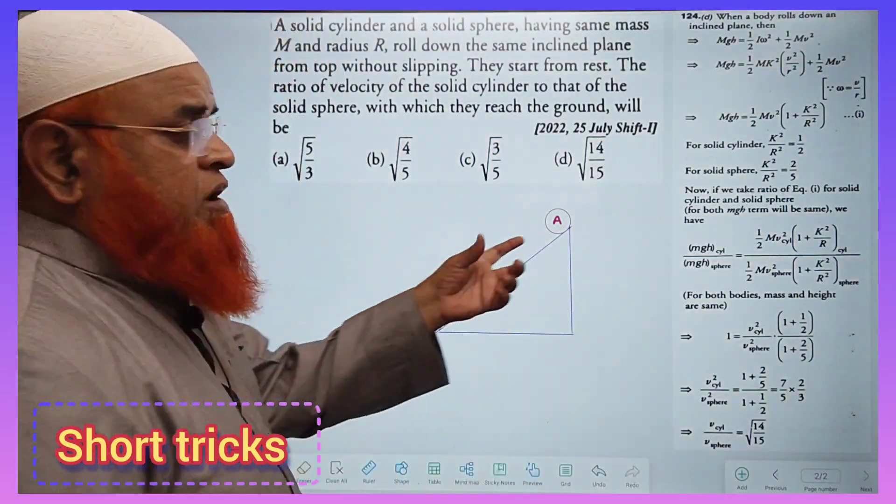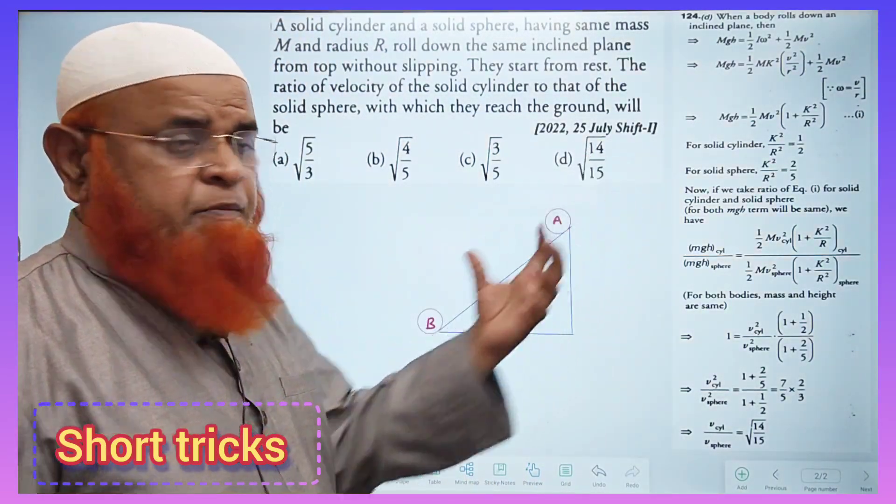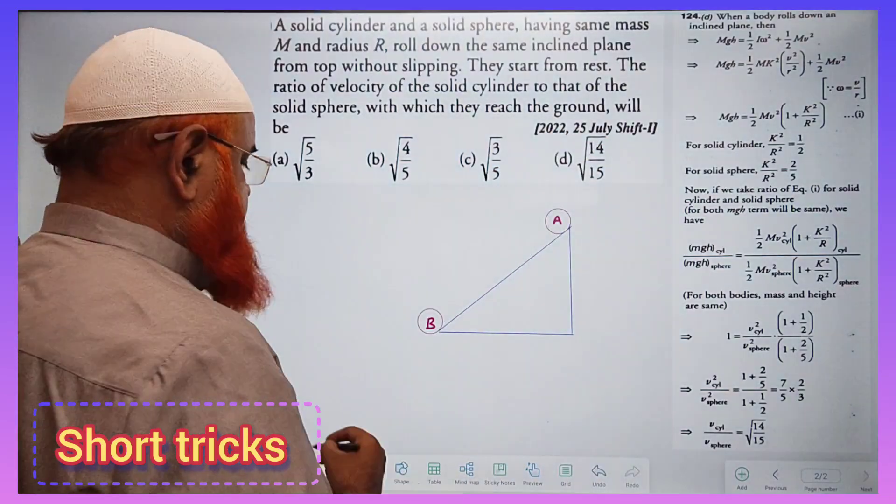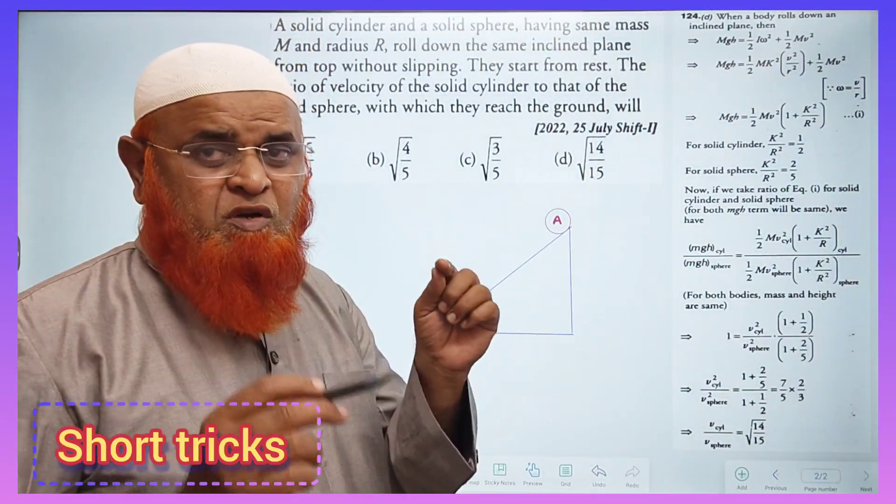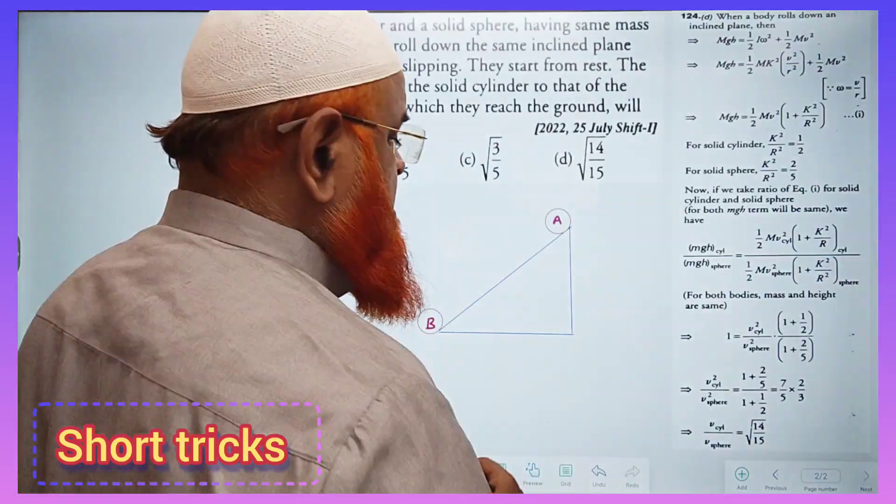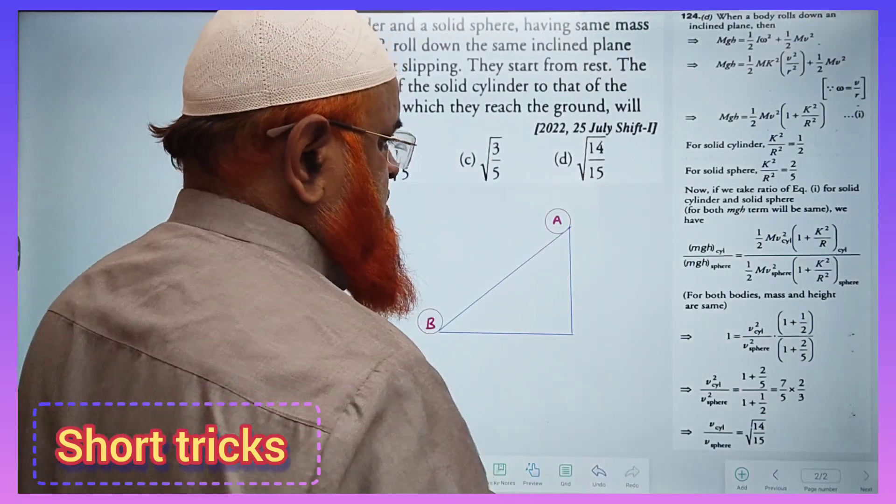Here the body has been dropped from an inclined plane and it is coming downwards. So he is asking us to find out what is the ratio of their velocities. That is the question here. He is asking us to find out the ratios of the velocities.